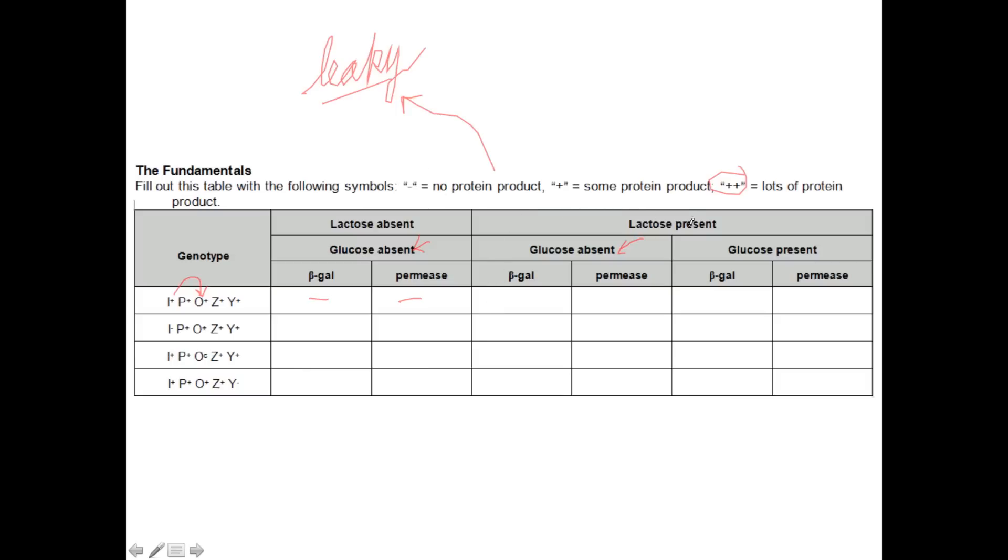If I add lactose though then I'm going to remove the repressor protein from the operator and we're going to transcribe through and we are going to make both beta-galactosidase and permease. And that's going to happen under both glucose conditions here. So that's well and good.